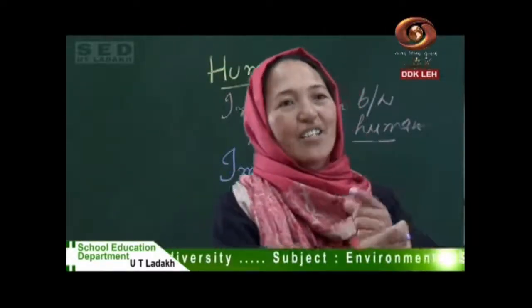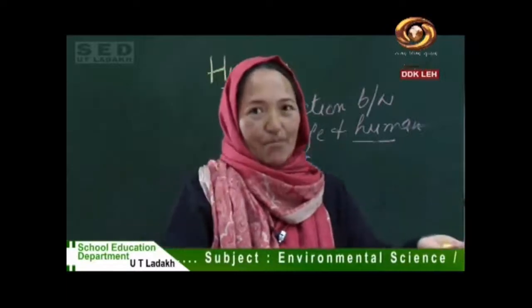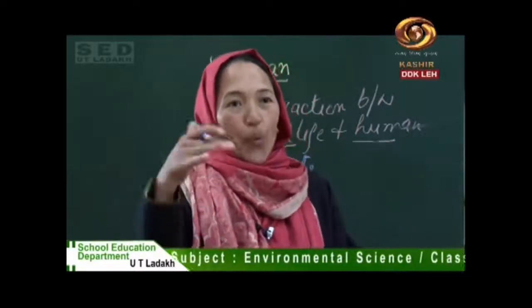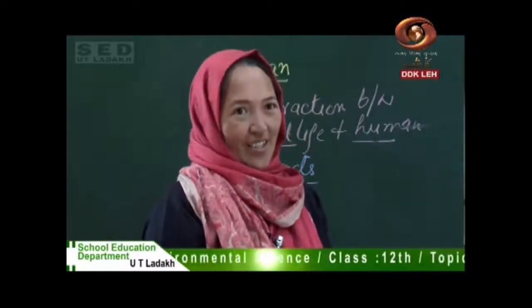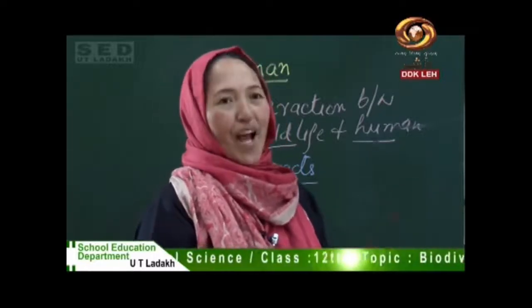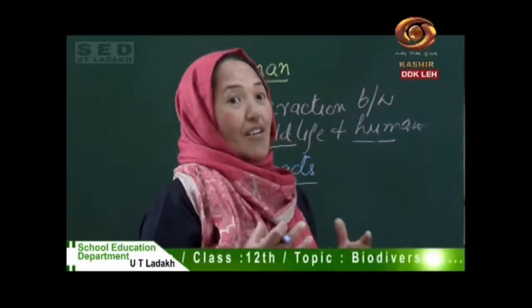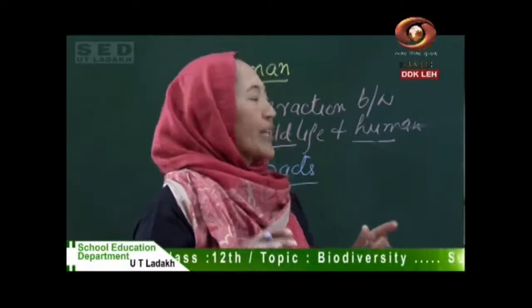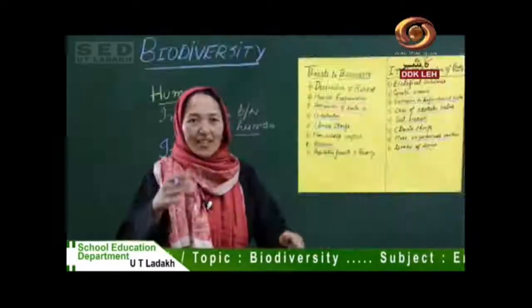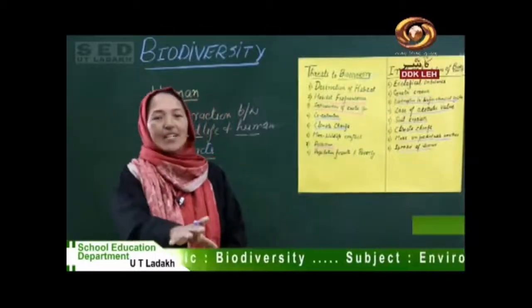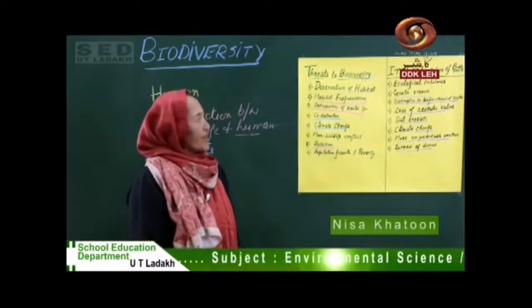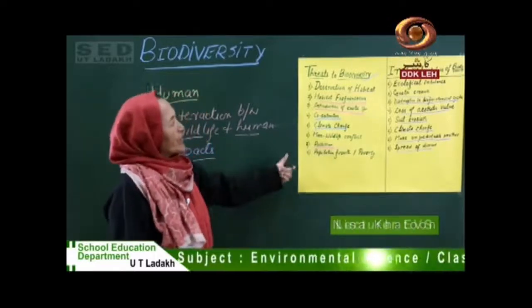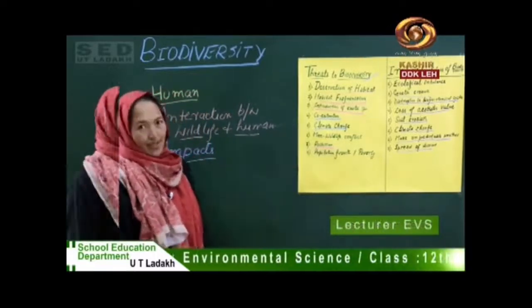God has created biodiversity to maintain everything in balance. But when human beings interfere, it changes. Wild animals, plants, and microorganisms are responsible for keeping the system balanced. When they are disturbed, they become responsible for the spread of diseases. This is how we complete the impact of the loss of biodiversity.